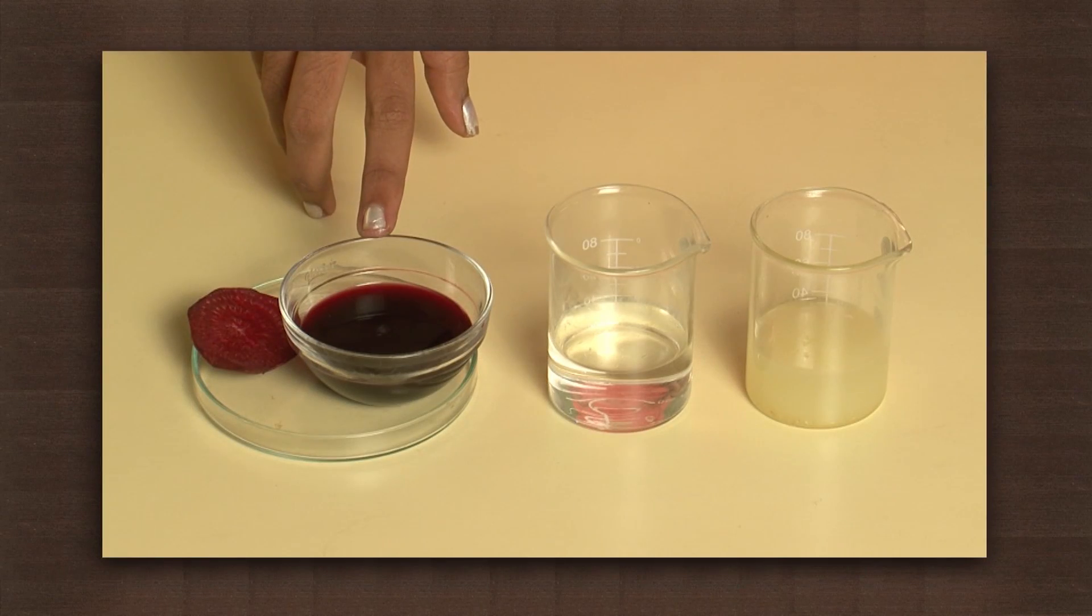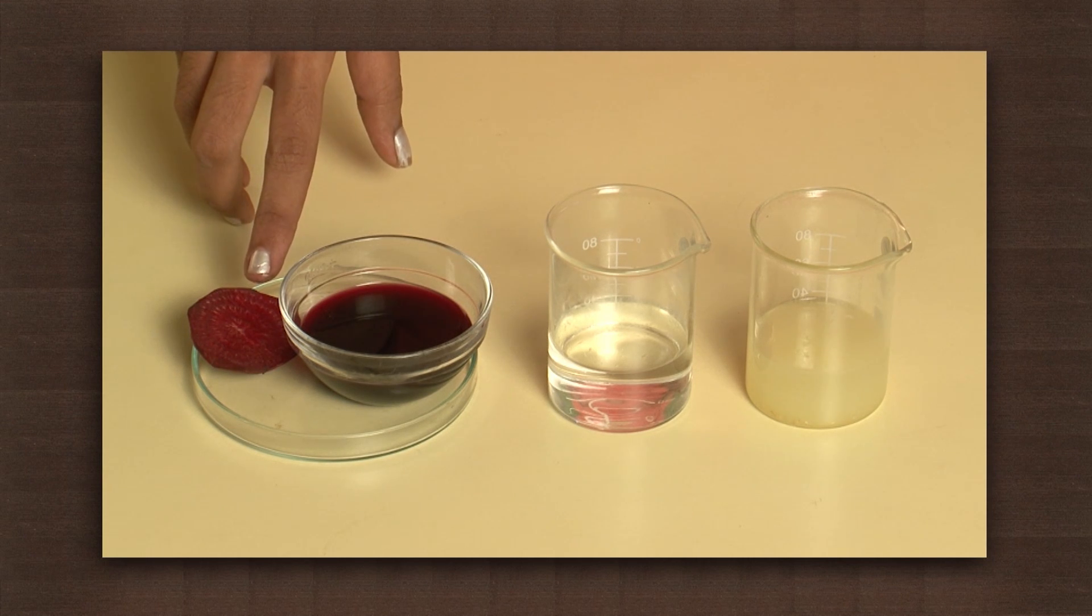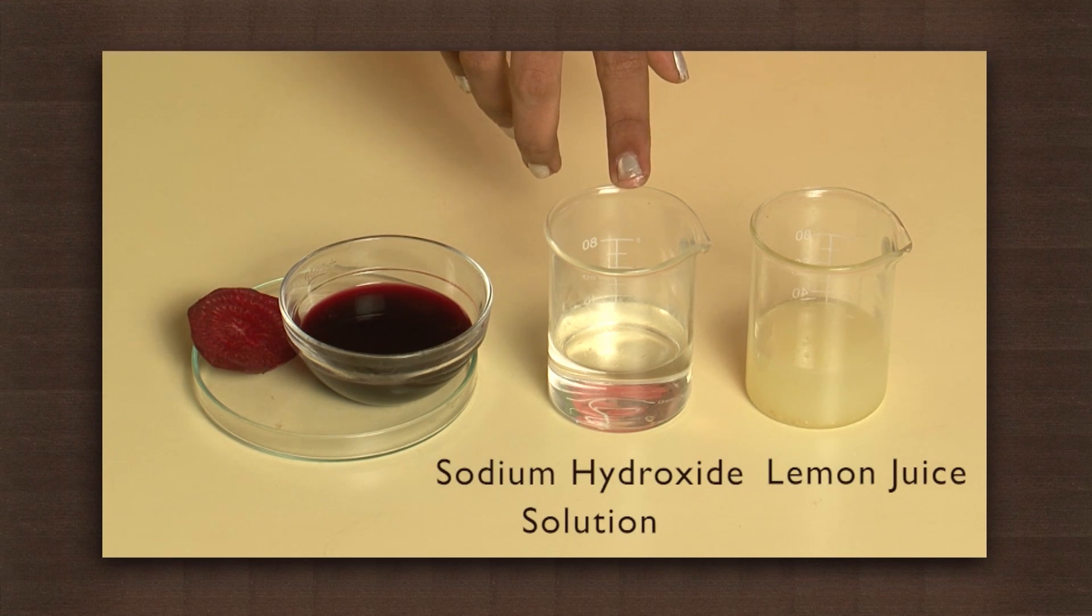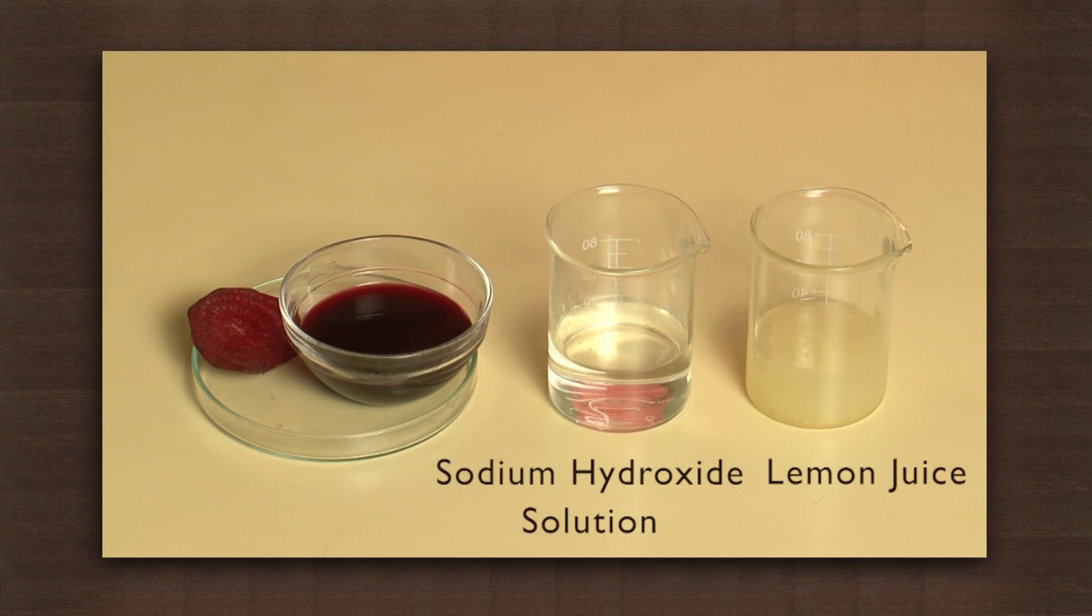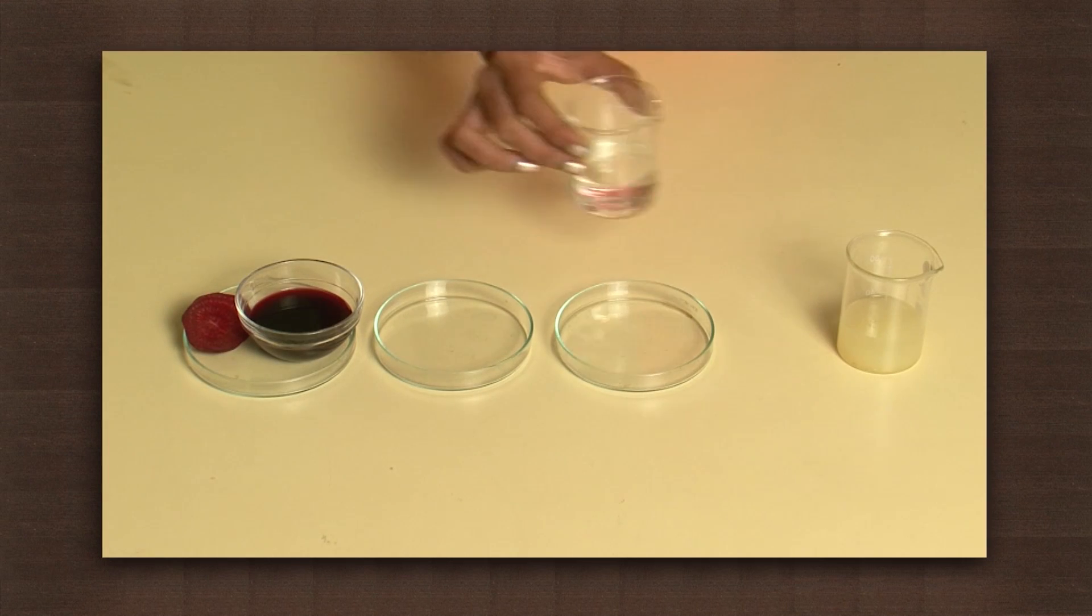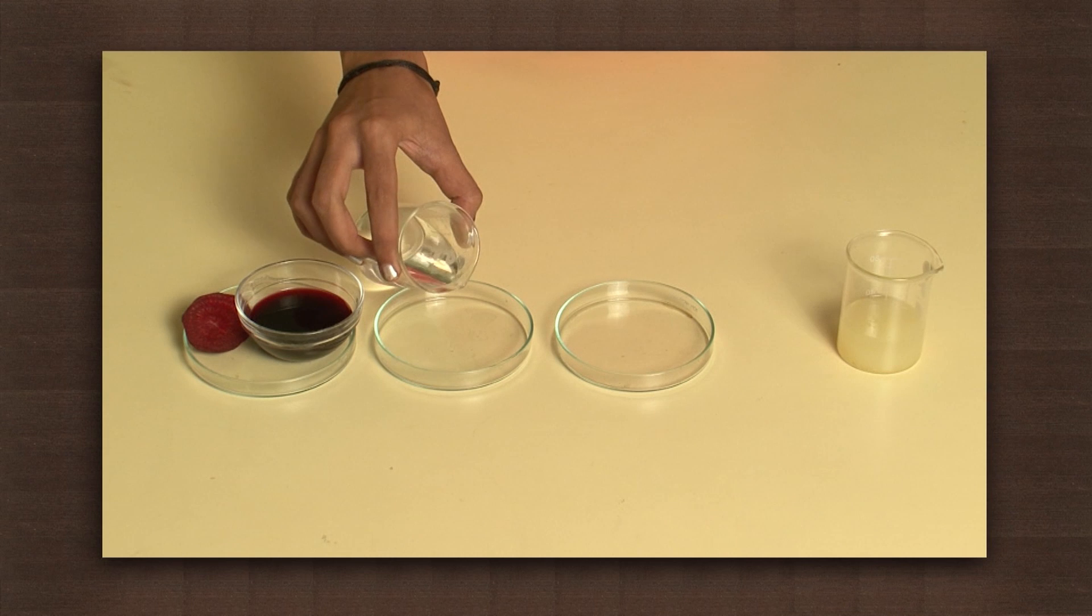For this we need beetroot juice extracted from beetroot paste using hot water, sodium hydroxide solution and lemon juice. Take some sodium hydroxide solution and lemon juice into petri dishes.